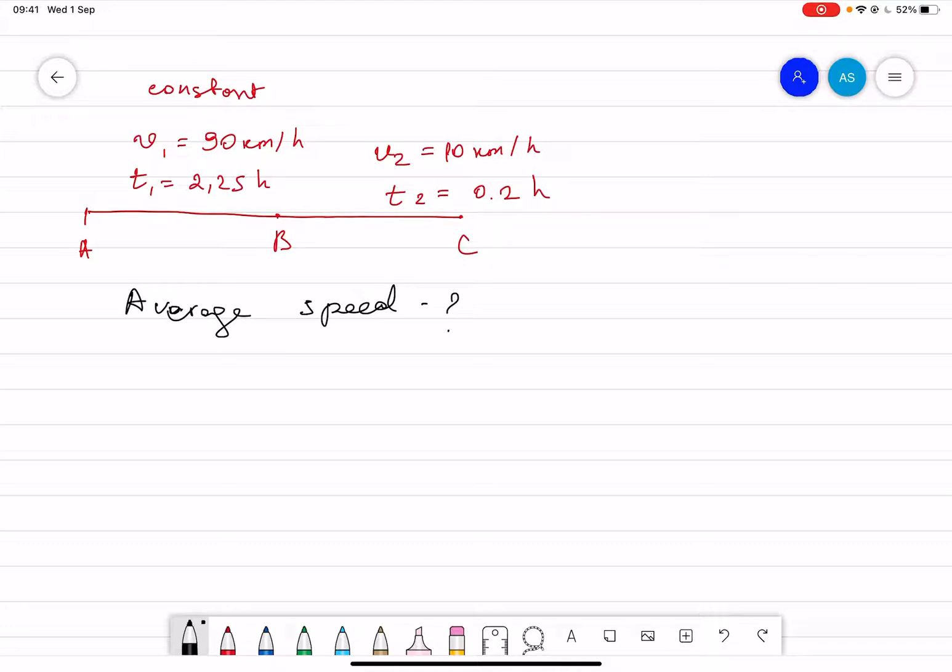So as you can see here, the car traveled two different distances with two different speeds and two different times. Now as you can see, the speed is constant in both cases.